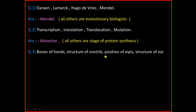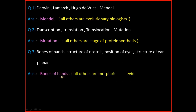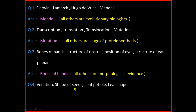Third Question: Bone of hands, Structure of nostrils, Position of eyes, Structure of ear pinna. And the answer is Bone of hands. All others are morphological evidence.